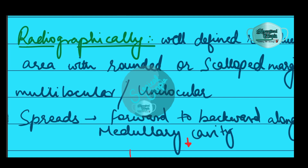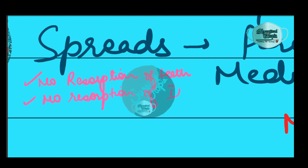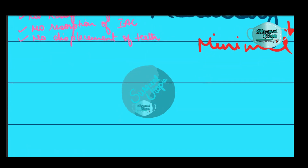There will be no resorption of teeth, no displacement of the inferior dental canal, and teeth displacement is minimal. Because the OKC spreads in the forward and backward direction causing no expansion, lesions are most of the time very large by the time they are accidentally discovered on radiographs.